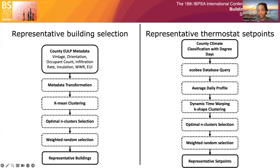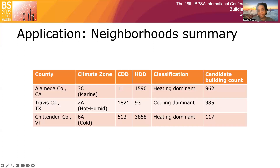We group buildings by similar set-point profiles and select cluster counts that maximize the cumulative score of three clustering validation indices: namely the Dunn index, Davies-Bouldin, and Silhouette index. Our three locations of interest are in Alameda County, California; Travis County, Texas; and Chittenden County, Vermont.